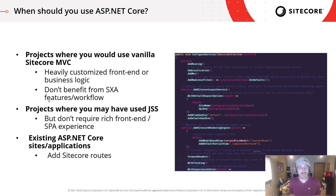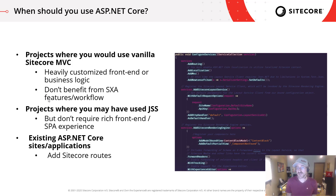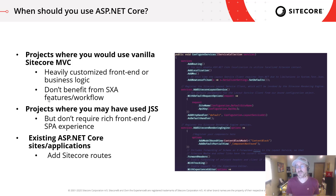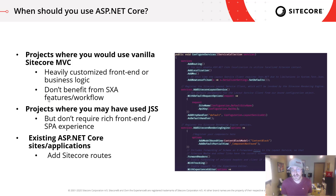We have several options for developing with Sitecore on the rendering side, and you're probably asking when you should use ASP.NET Core. First, consider it in projects where you would normally use what I call vanilla Sitecore MVC — this might mean you have heavily customized front-end or business logic, or otherwise wouldn't benefit from SXA features or workflow. You could also consider it in projects where you might have used JSS but don't require the rich front-end or SPA experience that the JavaScript frameworks provide. And it may also be useful for existing ASP.NET Core applications where you want to sprinkle in Sitecore content to specific routes within that existing application.